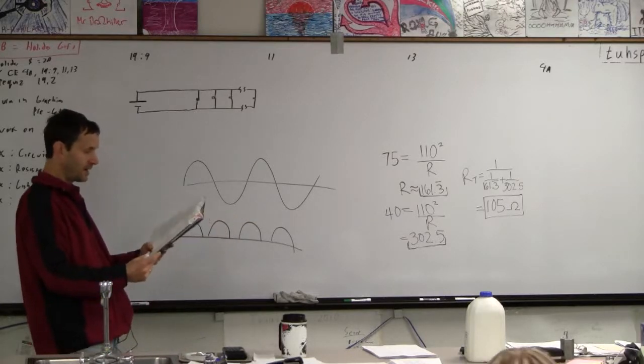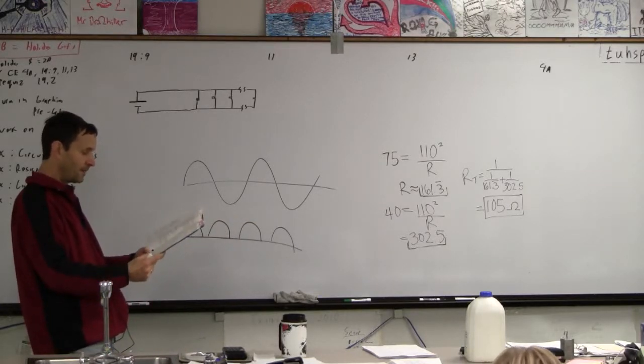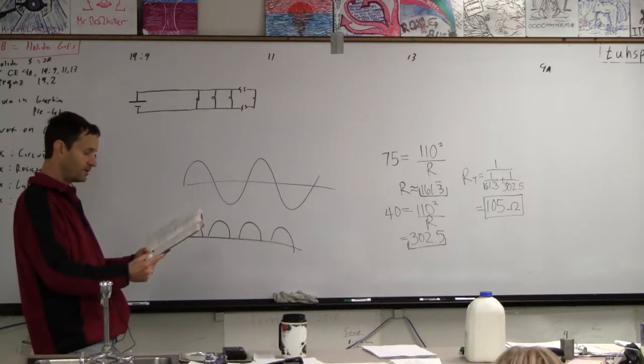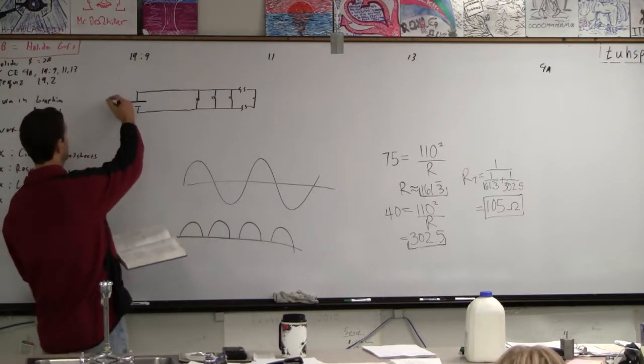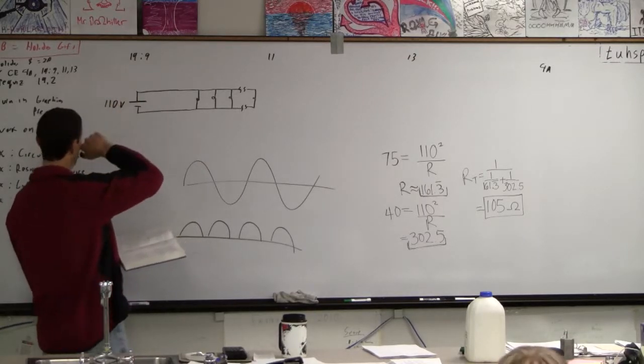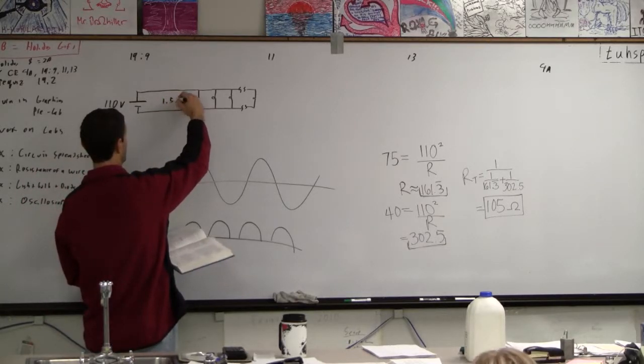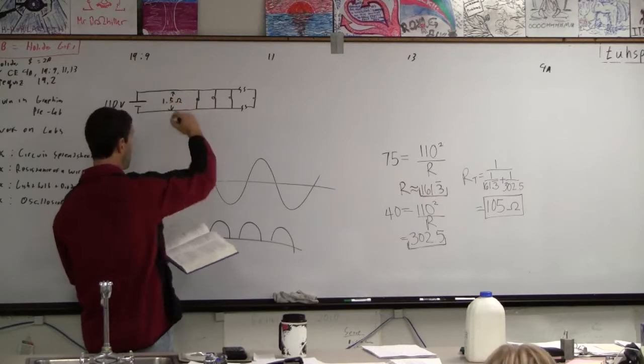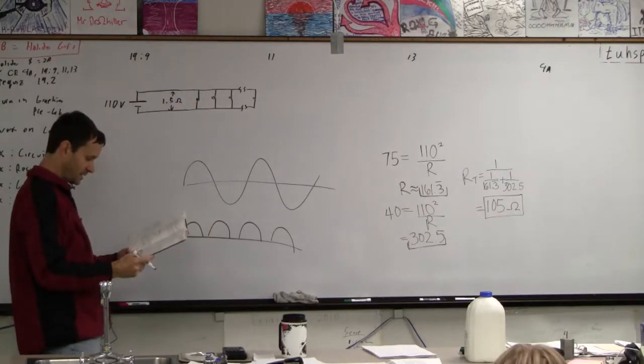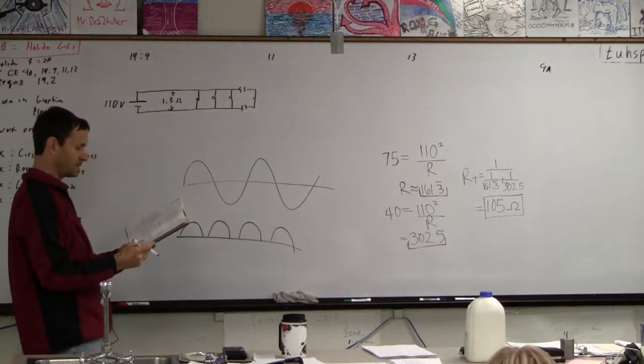Okay, this is problem number nine from chapter 19. Eight lights are connected in parallel to a 110 volt source. So this is 110 volts, right? And then these leads have a combined resistance of 1.5 ohms. A total resistance is what they say. Two leads with a total resistance of 1.5 ohms.